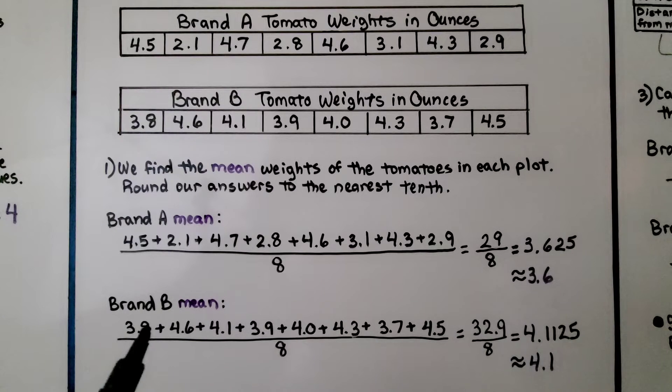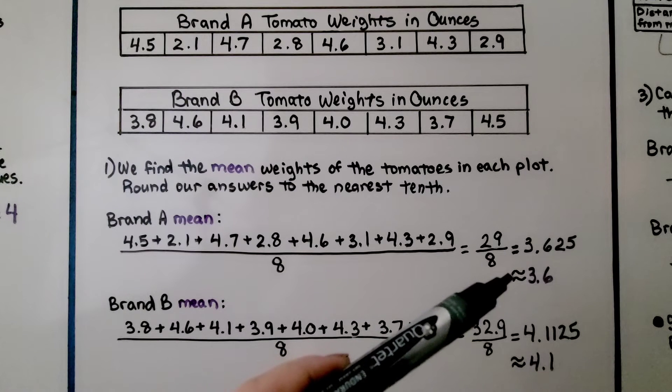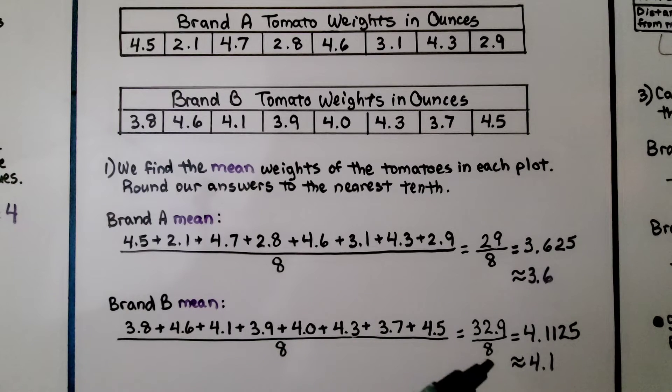We do the same thing for brand B to find its mean, its average. We add all of the digits, we get 32 and 9 tenths. There's 8 data values in the table, so we're going to divide it by 8. And we get 4.1125. This 1 tells that 1 to stay the same, so it's going to be approximately 4 and 1 tenths. So the mean for brand A is about 3 and 6 tenths, and the mean for brand B is about 4 and 1 tenths. But we're not done.